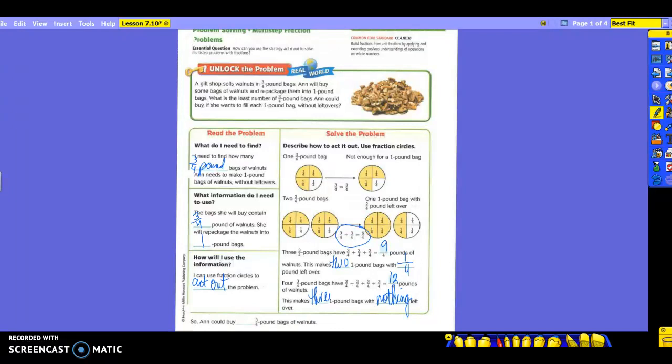So that means that Ann's going to buy how many three-fourths pound bags of walnuts? Four. Four. Right here is where we were at. So it takes four three-fourths pound bags in order to make three one-pound bags that don't have any leftovers.